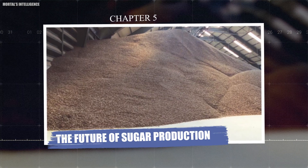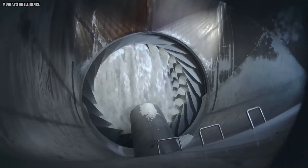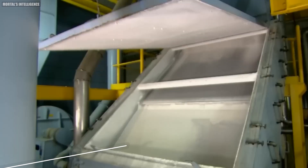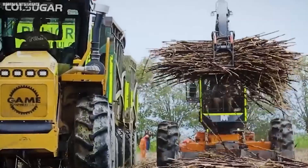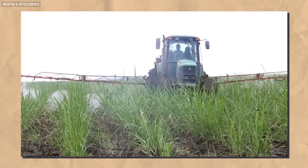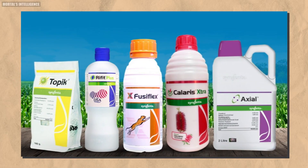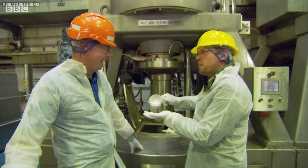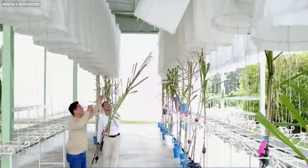Chapter 5: The Future of Sugar Production. As the global population expands, the demand for sugar is poised to rise. However, the environmental impact of sugar production, especially from sugarcane plantations, is becoming an increasing concern. Researchers are actively exploring innovative technologies and methods to make sugar production more sustainable. One promising approach involves the use of biodegradable mulches. These mulches help retain soil moisture, reduce weed growth, and minimize the need for chemical herbicides. By breaking down naturally, they also contribute to soil health, reducing the environmental footprint of sugarcane farming.